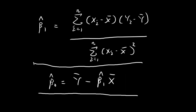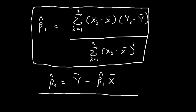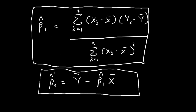So essentially we're done — we've derived the formulas that allow us to estimate beta 0 and beta 1. In the coming videos, I'm going to show you the different properties of these two estimators. We'll see that they have some really nice properties, which is why we're learning about them in the first place.